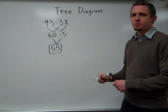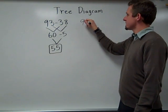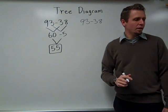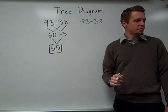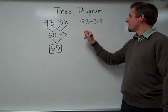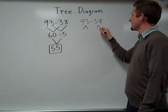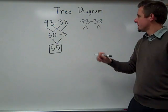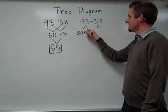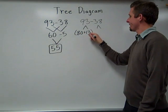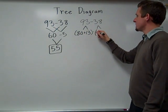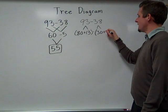Another way to use a tree diagram might be this. 93 minus 38. If I want to avoid using negative numbers, I can decompose the numbers maybe something like this. The 93 I could decompose into an 80 plus 13.